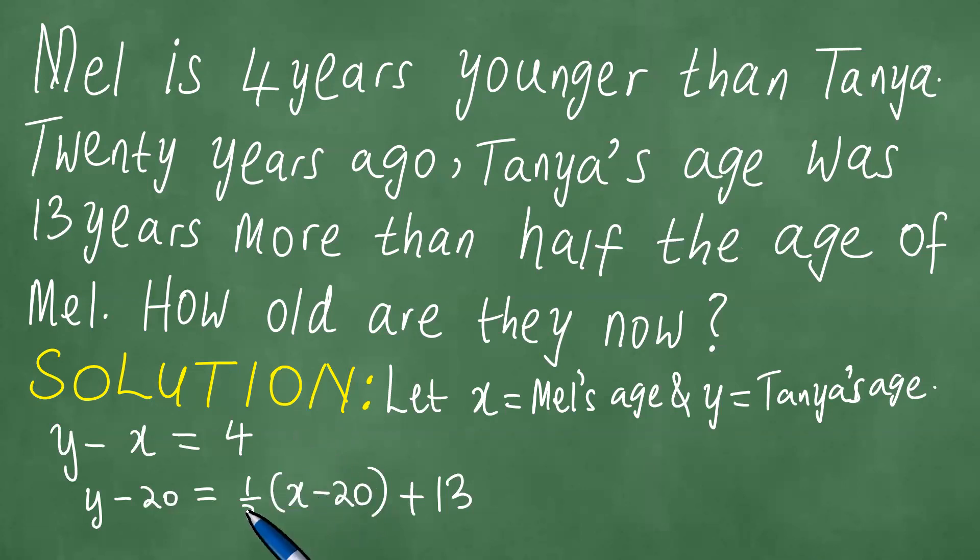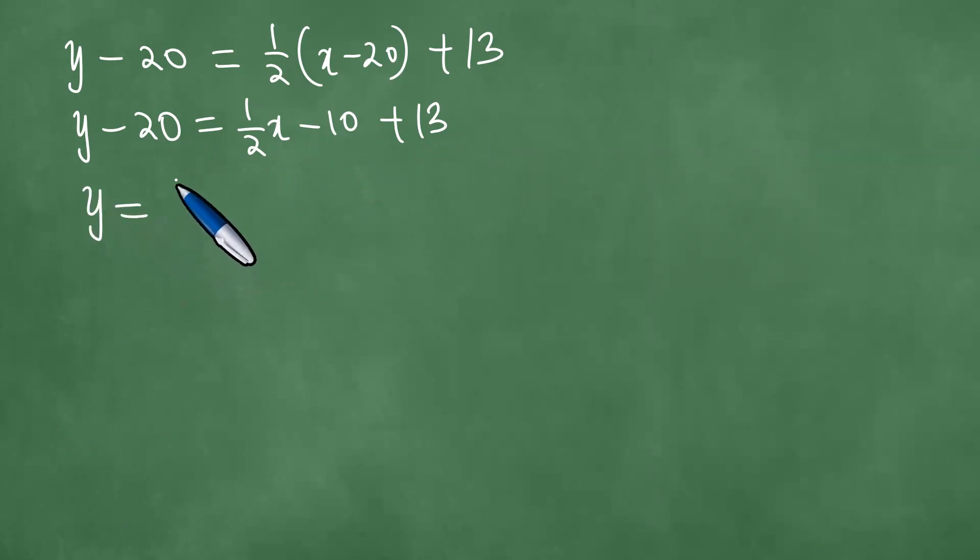We proceed to simplify the equation as follows: Y - 20 = 1/2(X - 20) + 13, meaning Y - 20 = 1/2X - 10 + 13. This simplifies to Y = 1/2X + 23 when we add 20 to both sides.